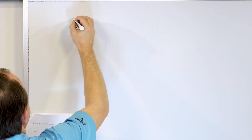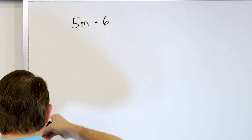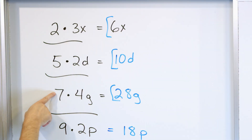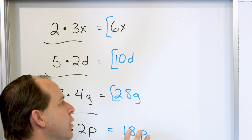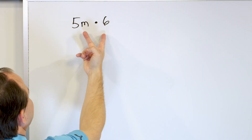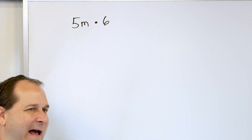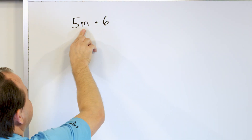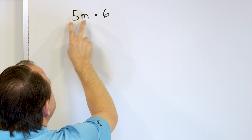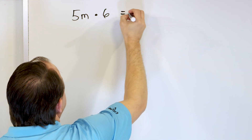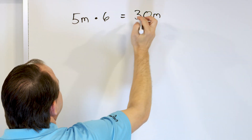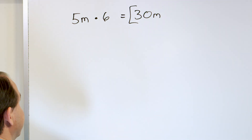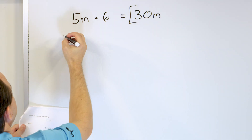What about 5m times 6? The only difference here is the term with the variable comes first and the number second, whereas before I had the number first. But multiplication doesn't matter what order you do it. So 5m times 6 is exactly the same as 6 times 5m. I have five monkeys in my house — that's what 5m means. But then I multiply that amount times 6, so I have to have 30 monkeys. 5 times 6 is 30, and the variable again comes along for the ride: 30m. You can think about monkeys or dinosaurs, or just memorize the math rules.